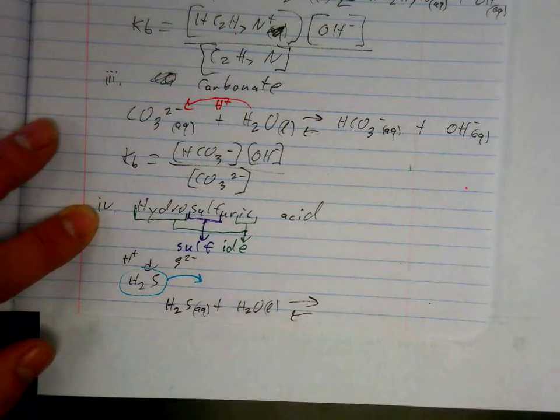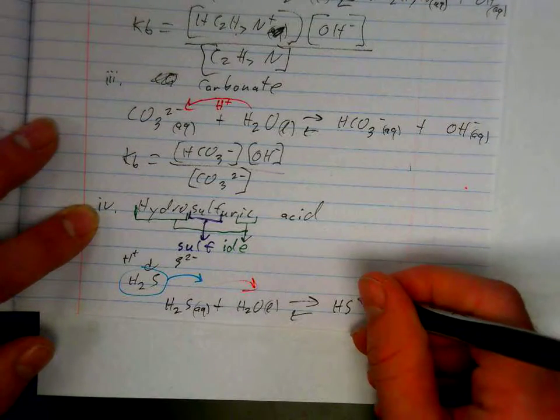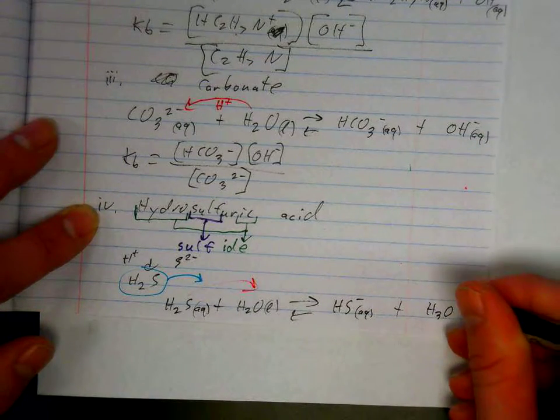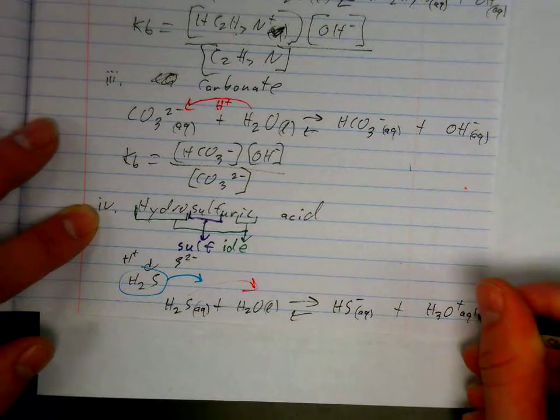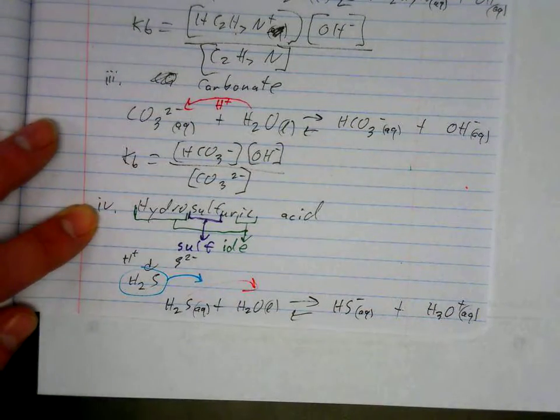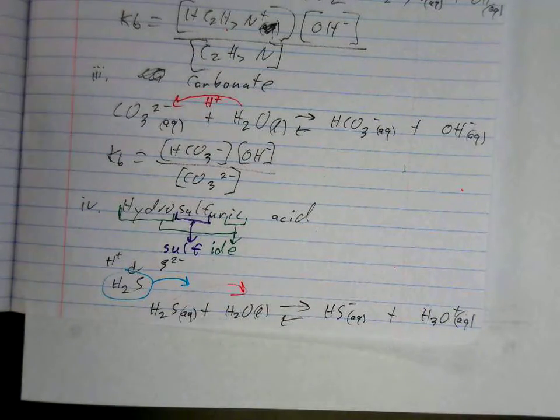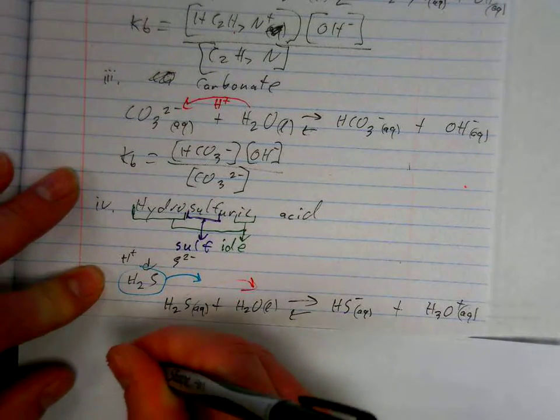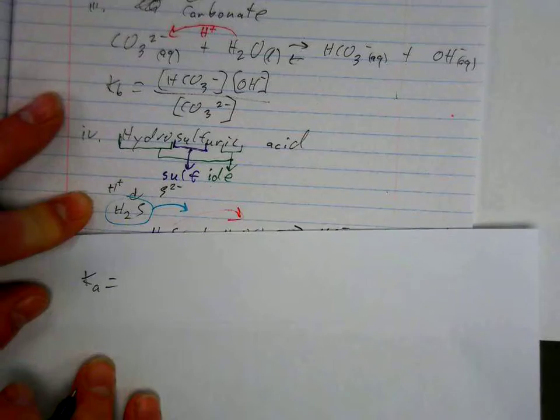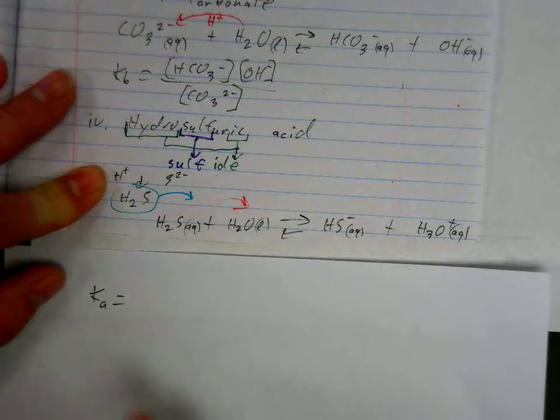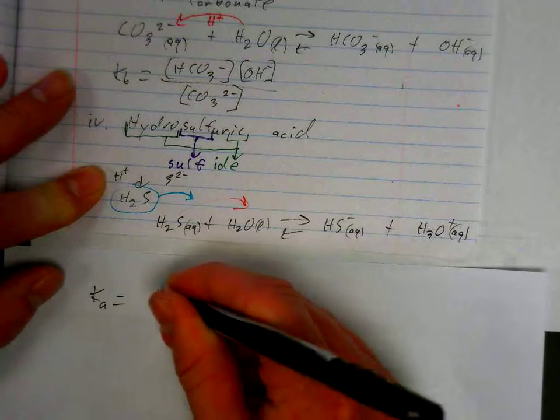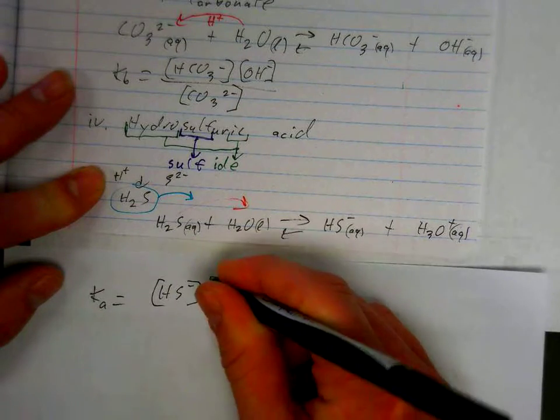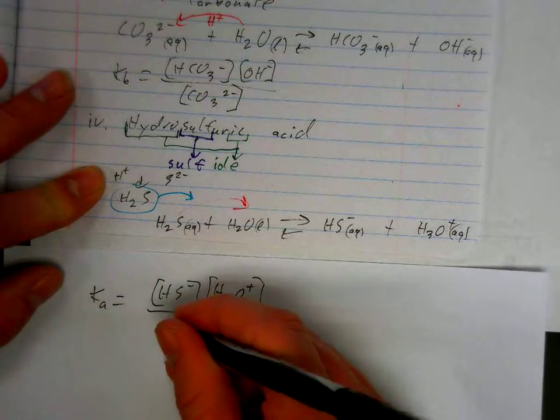H2S plus H2O. This is the acid. We get HS minus plus H3O plus. Now we're just writing. Ka is HS minus times H3O plus all divided by H2S.